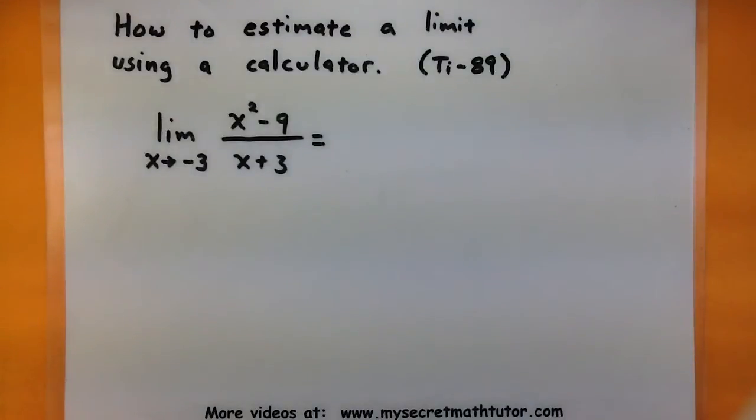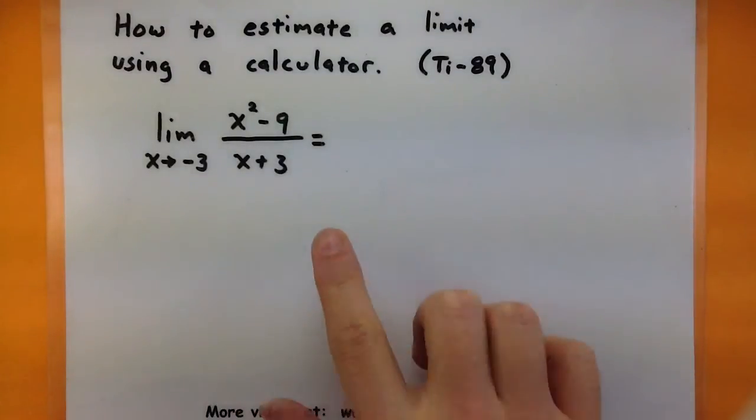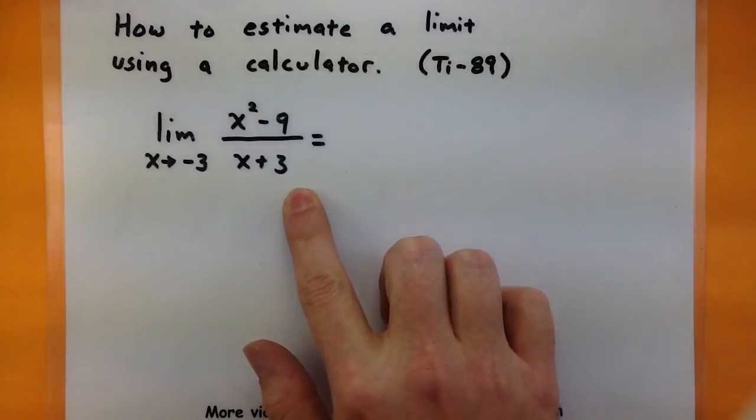Let's go ahead and take a look at how you can estimate the limit of a function using a calculator. In this particular video, I'll be using a TI-89 graphing calculator. So I want to figure out what is the limit as x approaches negative 3 of the function x squared minus 9 all divided by x plus 3.